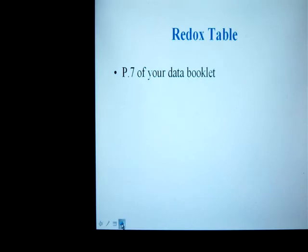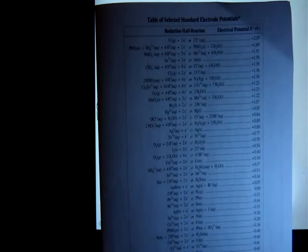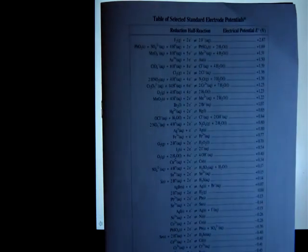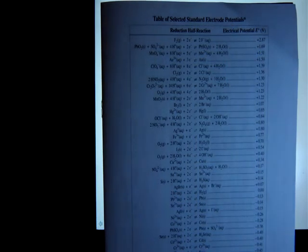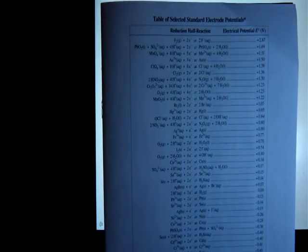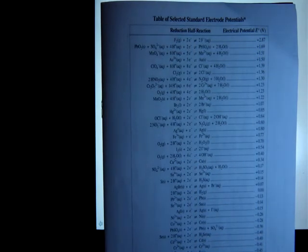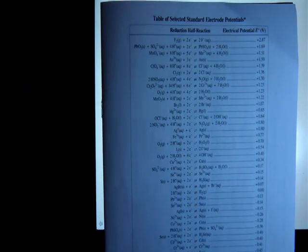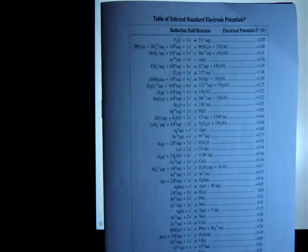So, redox table. I'm going to try to zoom in on the copy of it here. All right. So with your redox table, this is on page 7 of your data book list. It's a whole bunch of half reactions. They have electrons in them, so they're not a net reaction. They're just a half, partial reaction.